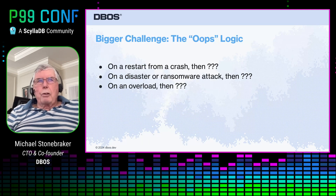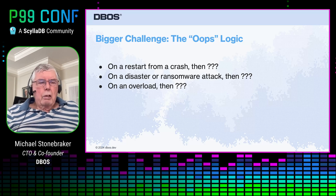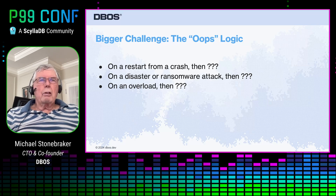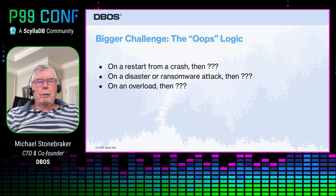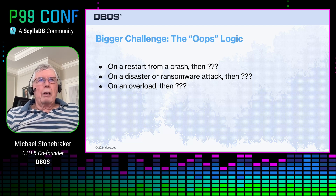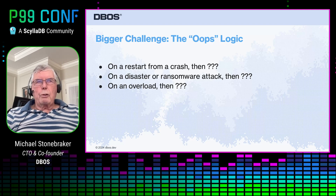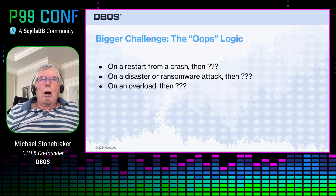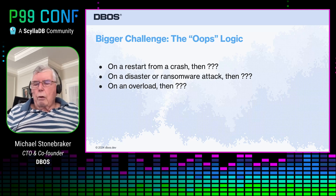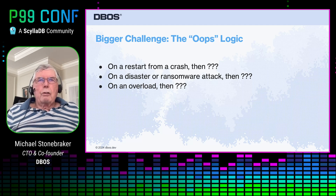And then an even bigger challenge: suppose your application crashes. You're in mid-flight trying to get a customer's order processed, and you've got to pick up the pieces. If disaster happens — heaven forbid AWS crashes, or heaven forbid there's a ransomware attack — then you're in the middle of things and things are all screwed up. And then if there's a sudden spike in load, that's a really great thing to happen, but then you don't want response time to go through the roof. So the oops logic — if things go wrong, or in the event of overloads — you need more logic to deal with this.